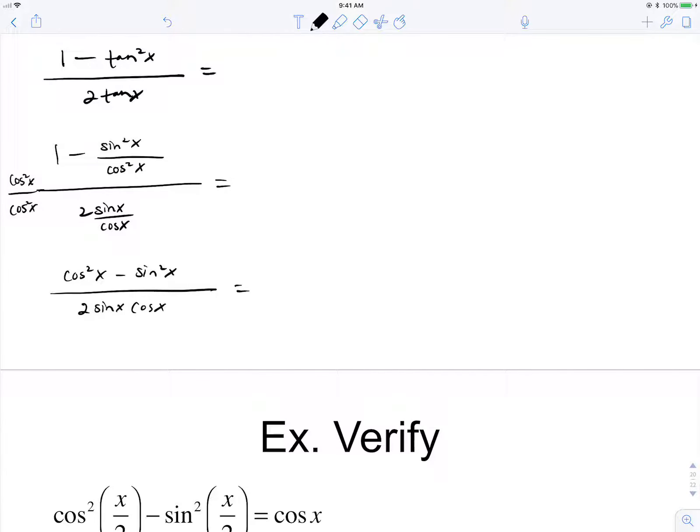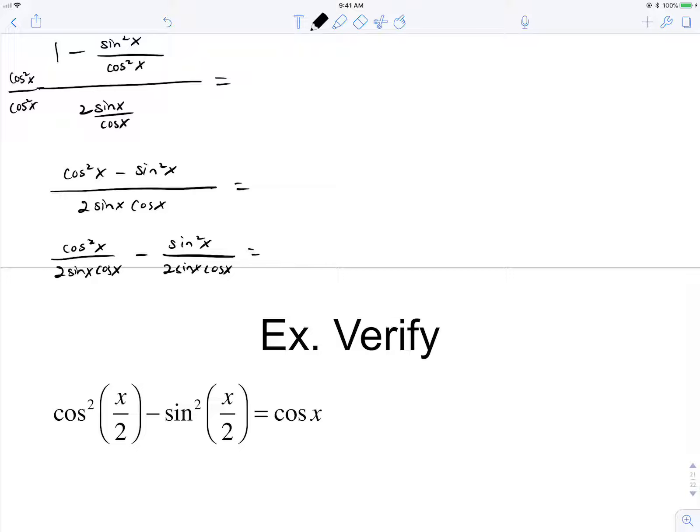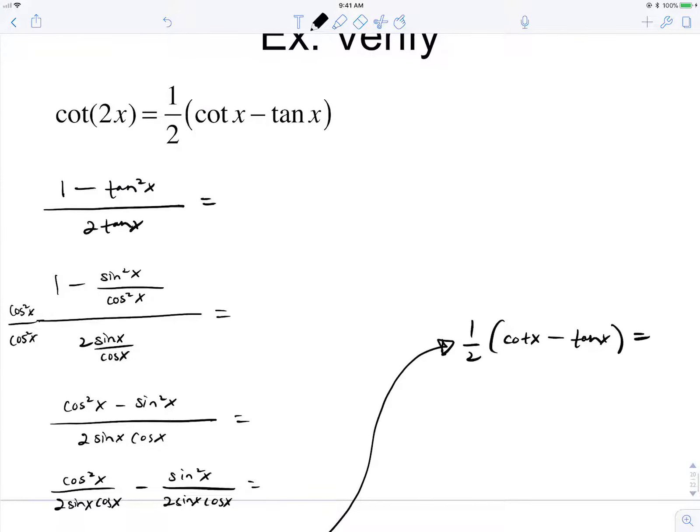Well, then this is going to be cosine squared over 2 sine times cosine minus sine squared over 2 sine cosine. So this will end up being... I'm just running out of room. If I factor one half out, cosine over sine is cotangent. And sine over cosine is tangent. I believe that's it. Sorry, that took me a while. I got stuck.